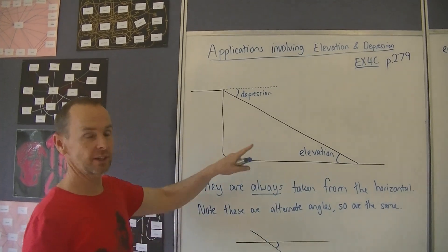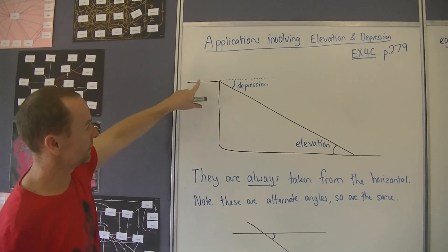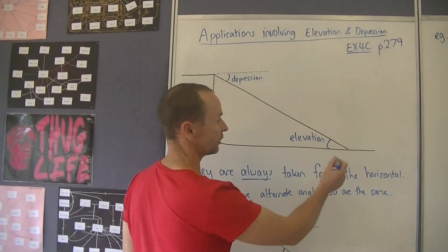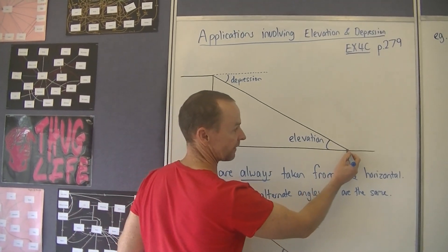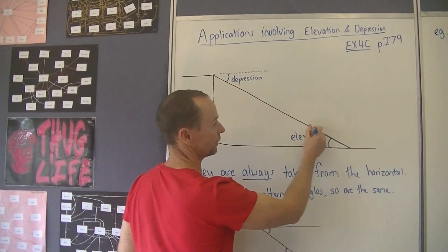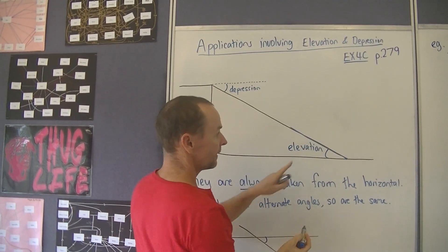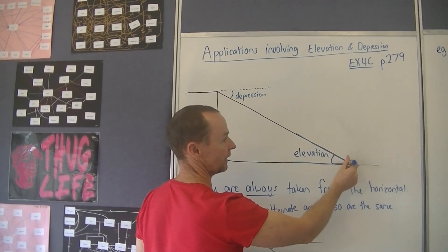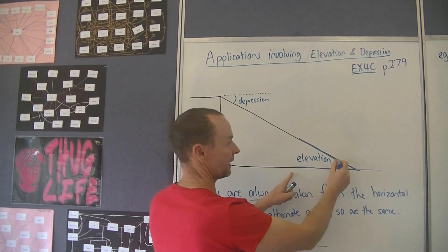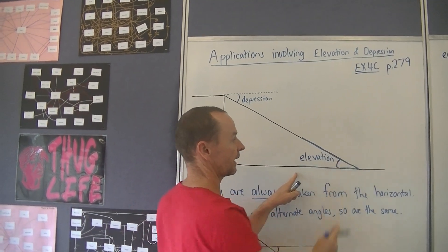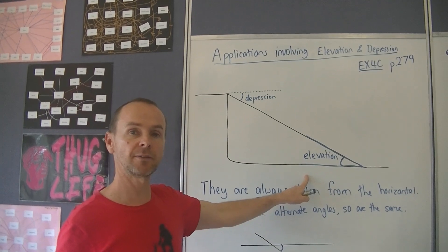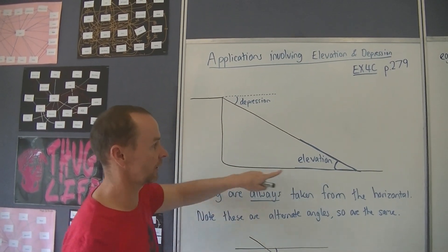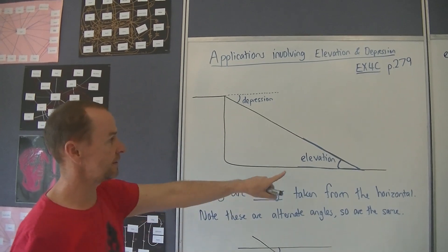First thing we've got to remember - here's a diagram, here's a cliff, and there's a ground level. The angle of elevation is easy. If you're standing here and you're looking upwards, this is your line of sight. The angle of elevation is taken from the horizontal and in between your line of sight. So the angle of elevation and depression are always taken from the horizontal, which is that line across there.